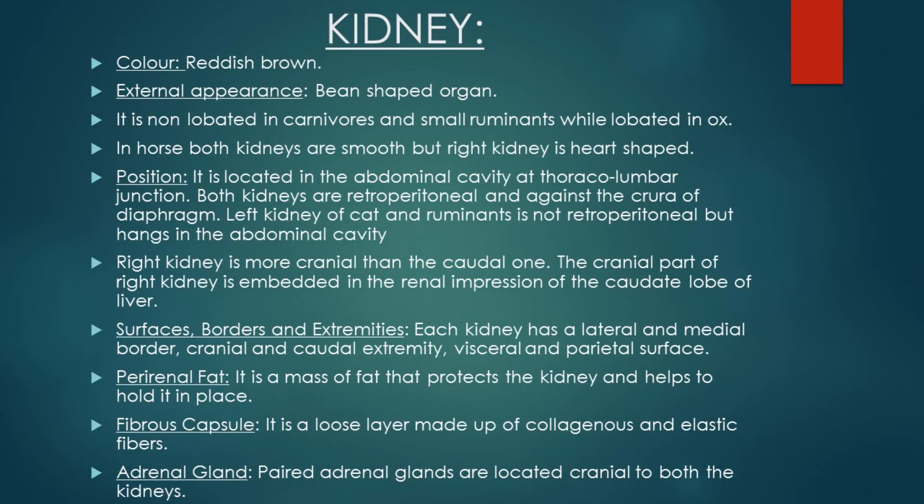Next is the perirenal fat. It is a mass of fat that protects the kidneys and helps to hold them in place. The whole kidney is surrounded and protected by a fibrous capsule, which is a loose layer made up of collagenous and elastic fibers. A pair of adrenal glands is located cranial to both kidneys.